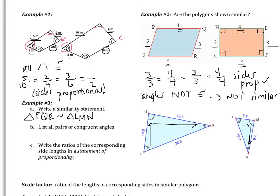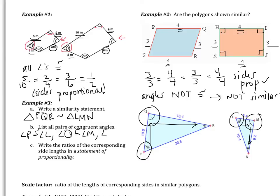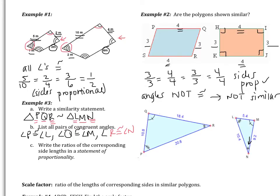Part B says list all pairs of congruent angles. So angle P is congruent to — P has 3 tick marks, and L has 3 tick marks — angle L. Angle Q is congruent to — Q has 1 tick mark, M has 1 tick mark — angle M. And angle R is congruent to angle N. This is exactly the same as when we did a congruency statement.